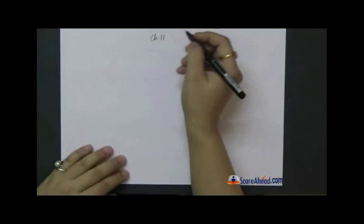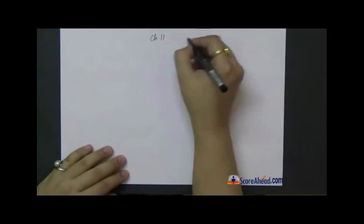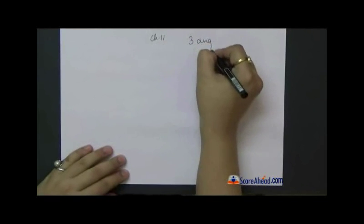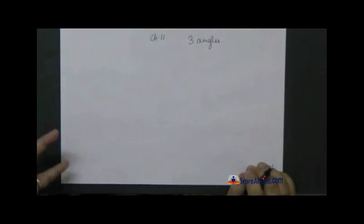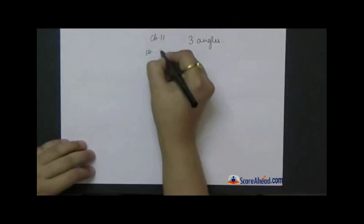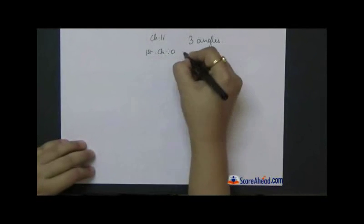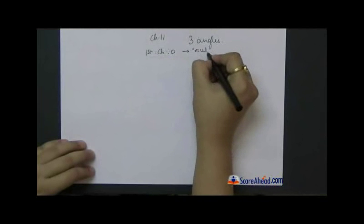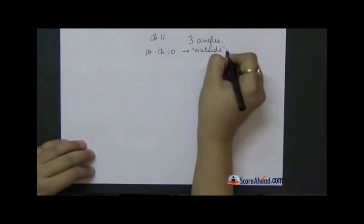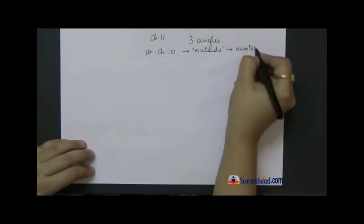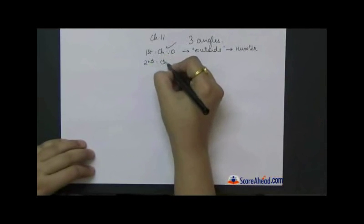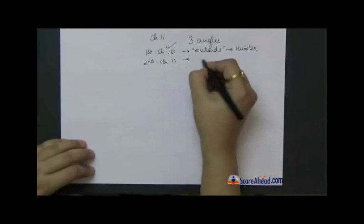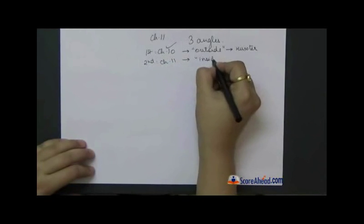Before we begin with Chapter 11, I have already told you and I repeat: there are three angles through which this one episode is seen. The first angle we have done in Chapter 10—it is like an outside view from the eyes of Huckster. We have already done this. The second we are going to do now in Chapter 11—it is like an inside view.